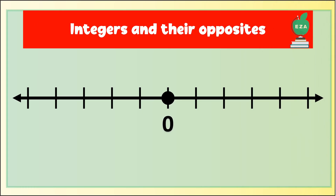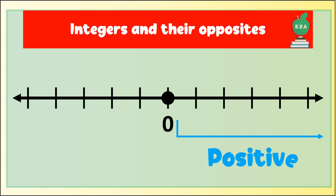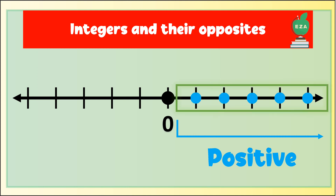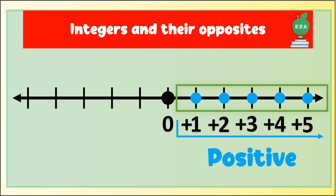Any number can be plotted on the number line. Positive numbers are numbers to the right of zero, or above zero, depending on the position of the number line. There are two ways to write positive numbers. They may be written as seen here, or with a plus sign like this.